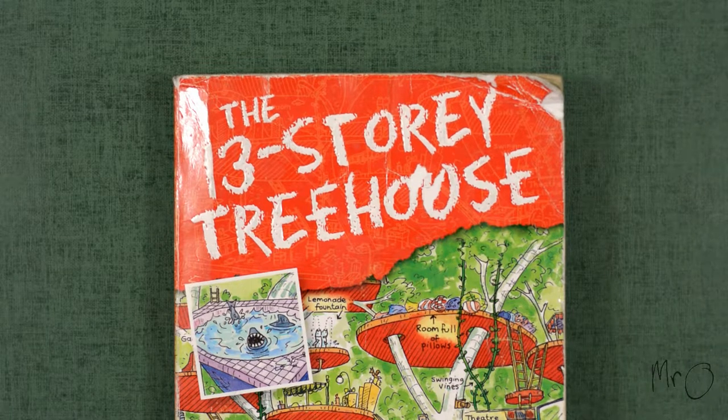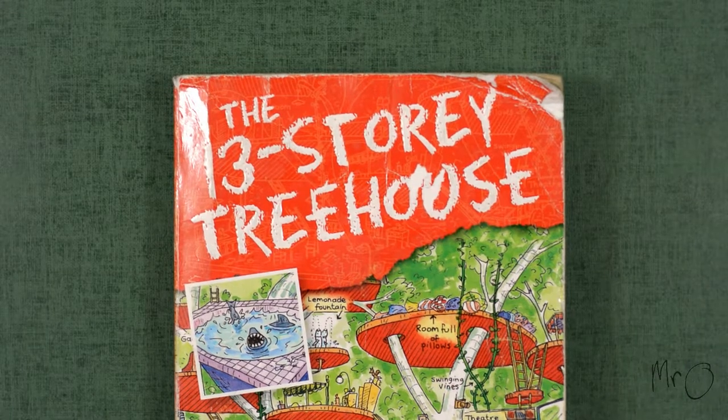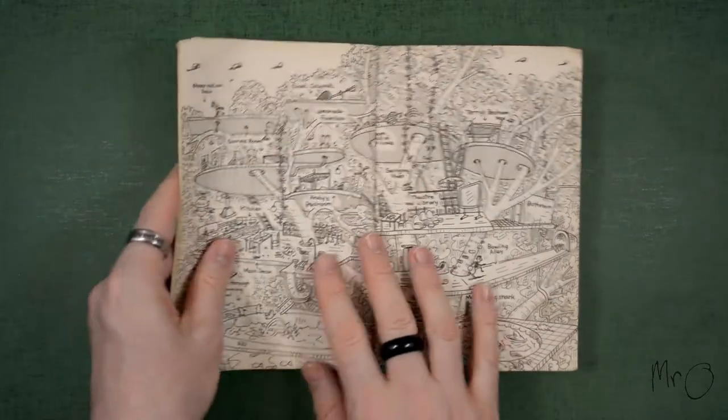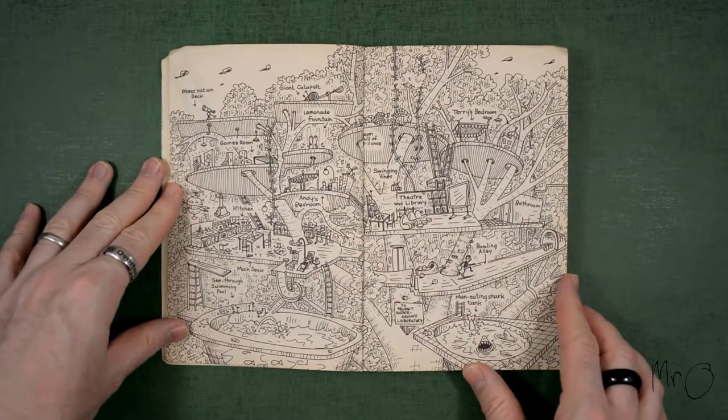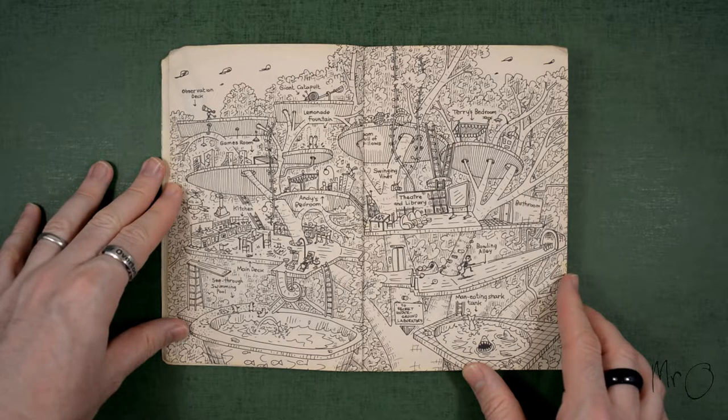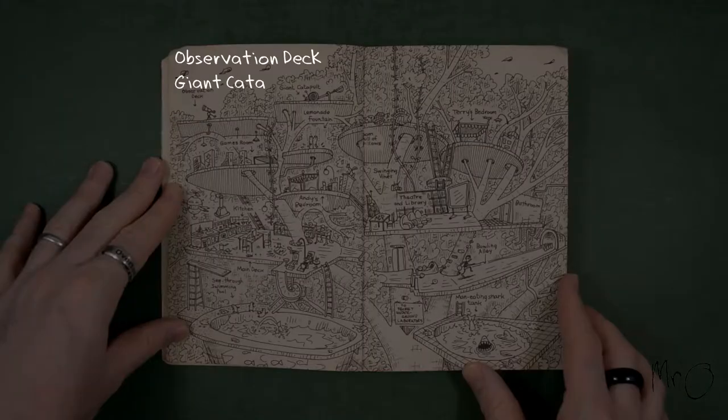What I did first of all, I looked in the 13-story treehouse at the map at the beginning, and I wrote down all of the names of all of the stories, or all of the rooms, on each level. One of which you can't see, that's the underground laboratory. But I wrote down all the others, and here they are.